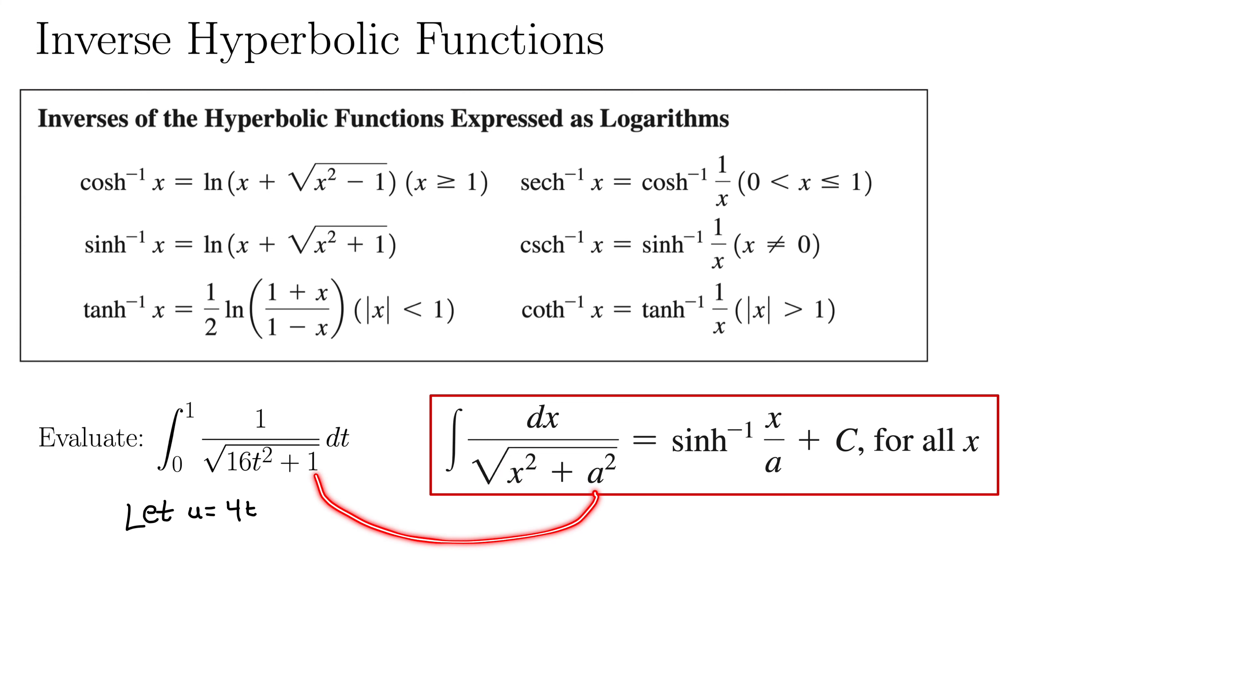Our a is 1, right? So that's not the problem here. It's that there's no constant in front of this x squared. So we need to write this as something squared. Well, that something is 4t. That just leaves us with a du that we have to think about.